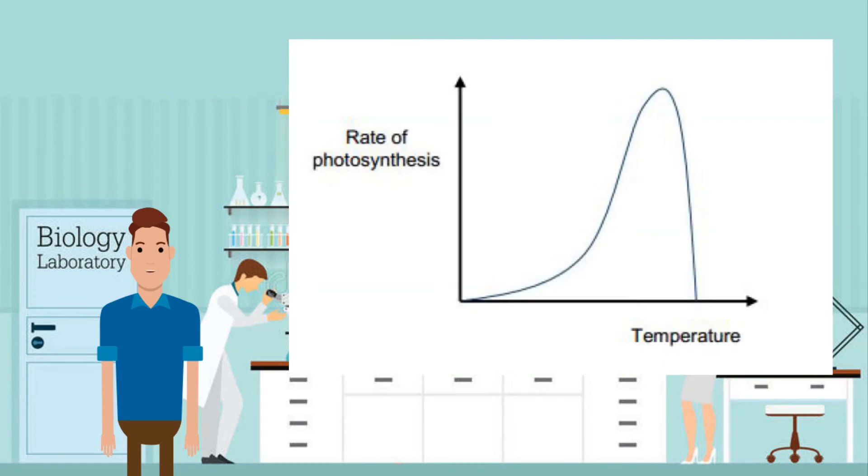How about the effect of temperature on the rate of photosynthesis? Like any reaction, you can expect an increase in temperature to increase the rate of photosynthesis. However, since there are enzymes that catalyze photosynthesis, as the temperature reaches a critical value, the rate decreases because the enzymes are denatured and no longer catalyze photosynthesis.